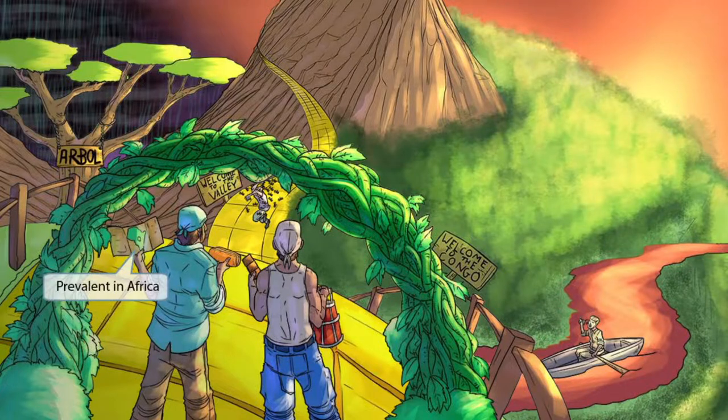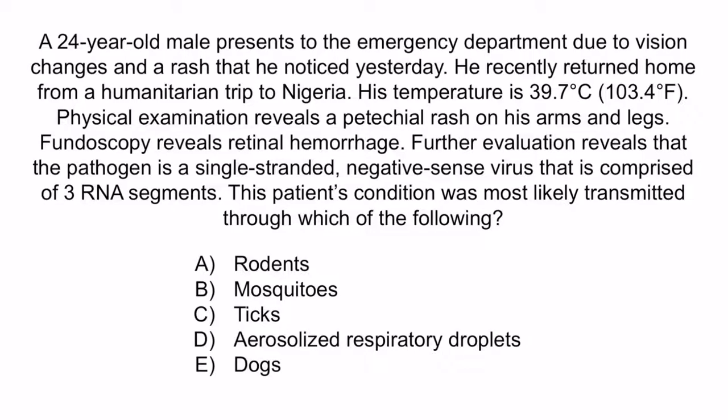Now that we've covered the image, let's review with a question. A 24-year-old male presents to the emergency department due to vision changes and a rash that he noticed yesterday. He recently returned home from a humanitarian trip to Nigeria. His temperature is 39.7 degrees Celsius (103.4 degrees Fahrenheit). Physical examination reveals a petechial rash on his arms and legs. Fundoscopy reveals retinal hemorrhage. Further evaluation reveals that the pathogen is a single-stranded, negative-sense virus comprised of three RNA segments. This patient's condition was most likely transmitted through which of the following?